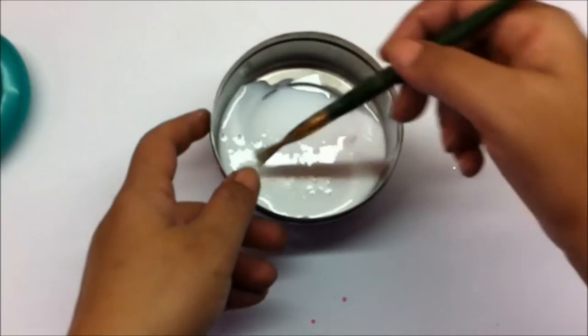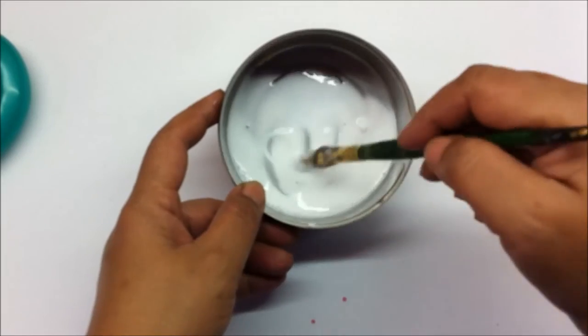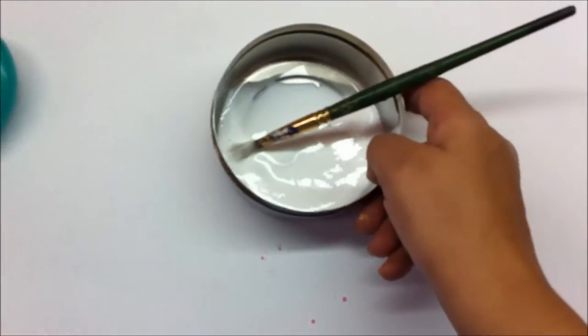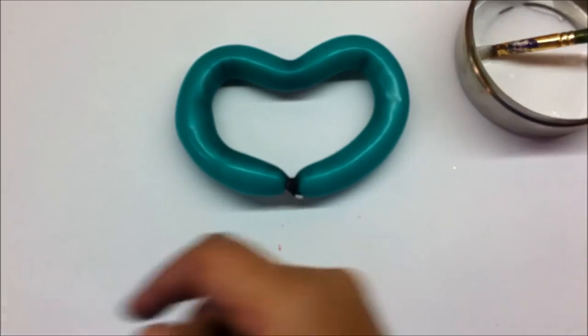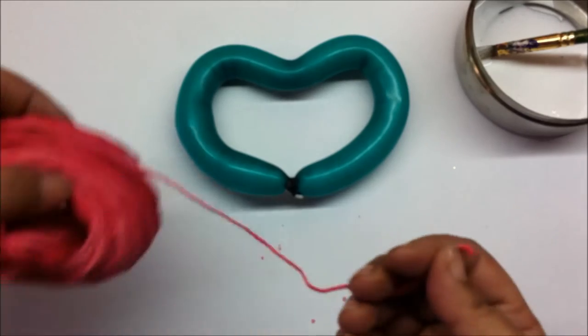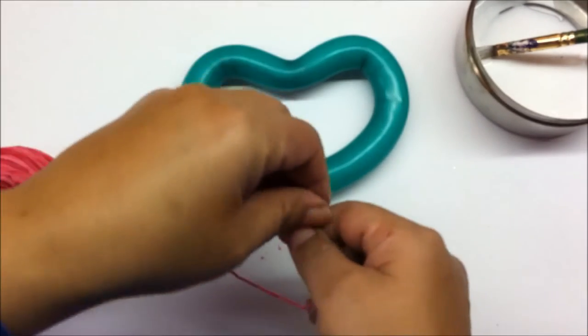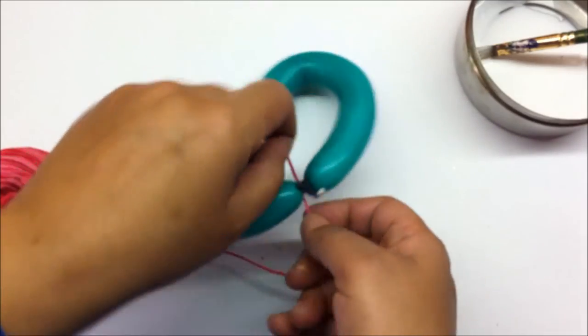Make a solution of glue, 3 parts glue and 1 part water, like this. And now take the balloon first and take the yarn also. So first tie the yarn at the bottom. Tie a knot.